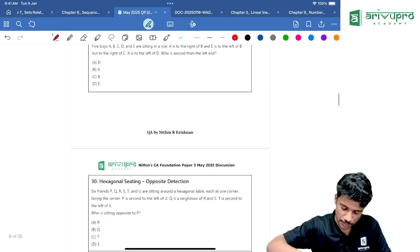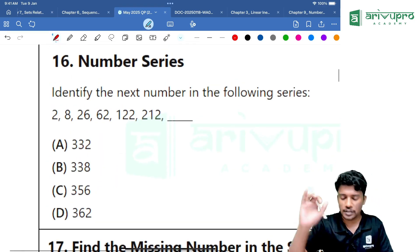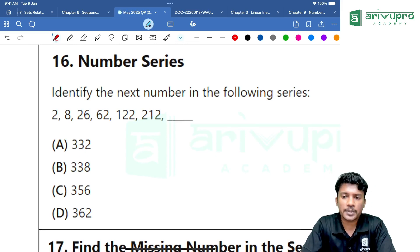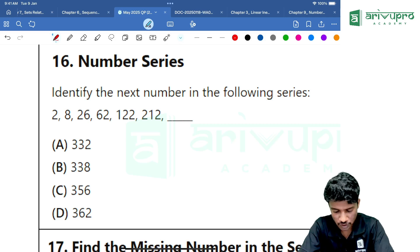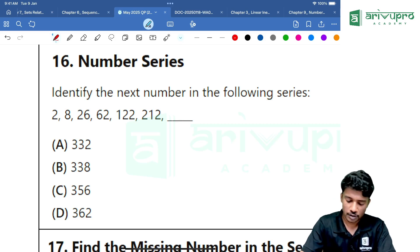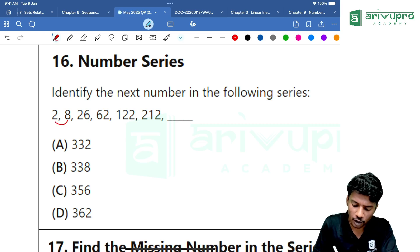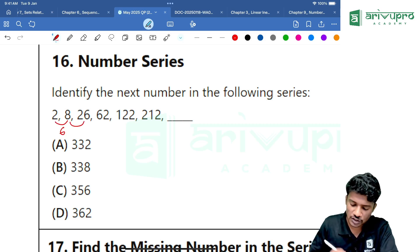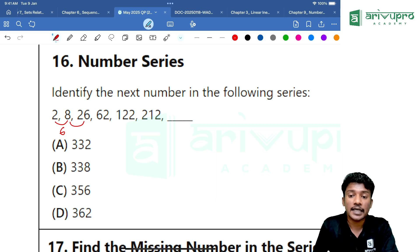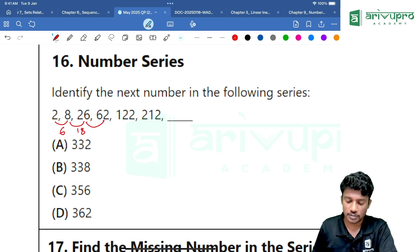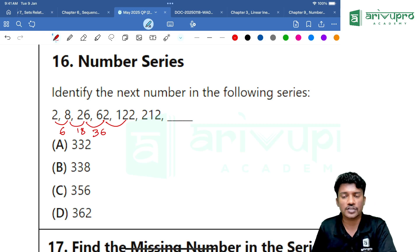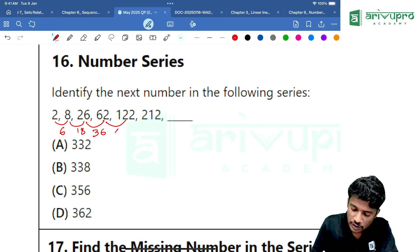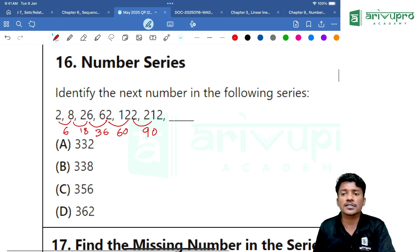Get me the answer. 2 is becoming 8, 8 is becoming 26, 26 is becoming 62, 62 is becoming 122, 122 is becoming 212. What is happening over here? Common difference 6, then common difference 18, then common difference is 36, then common difference is 60, then common difference is 90.